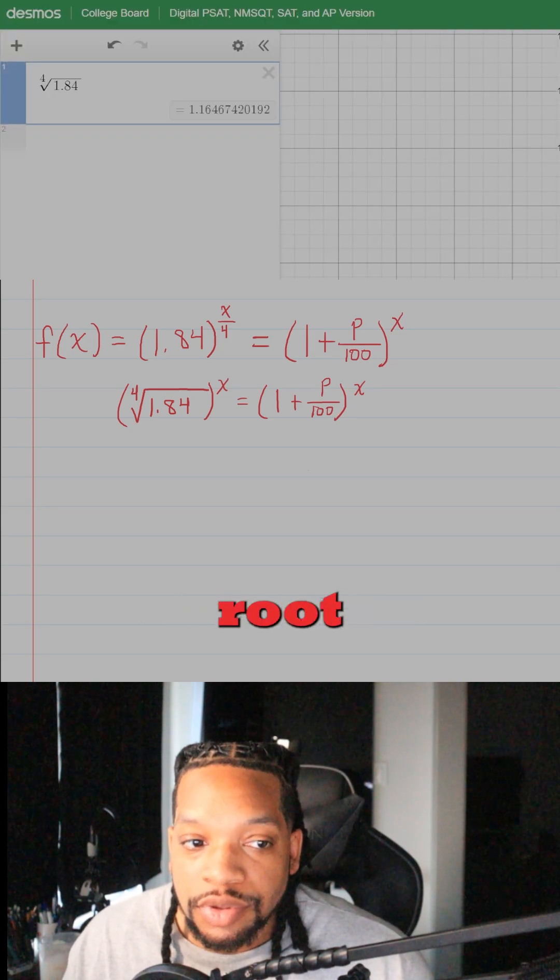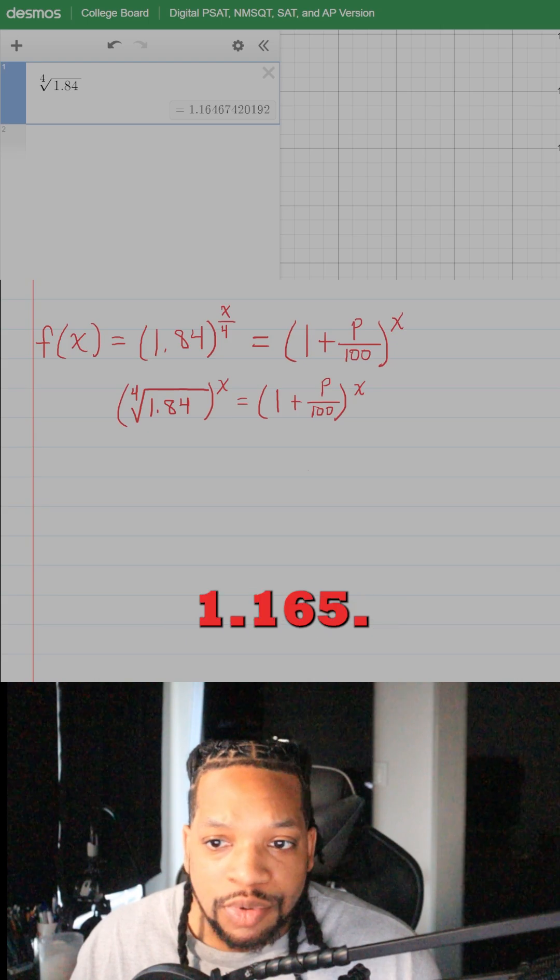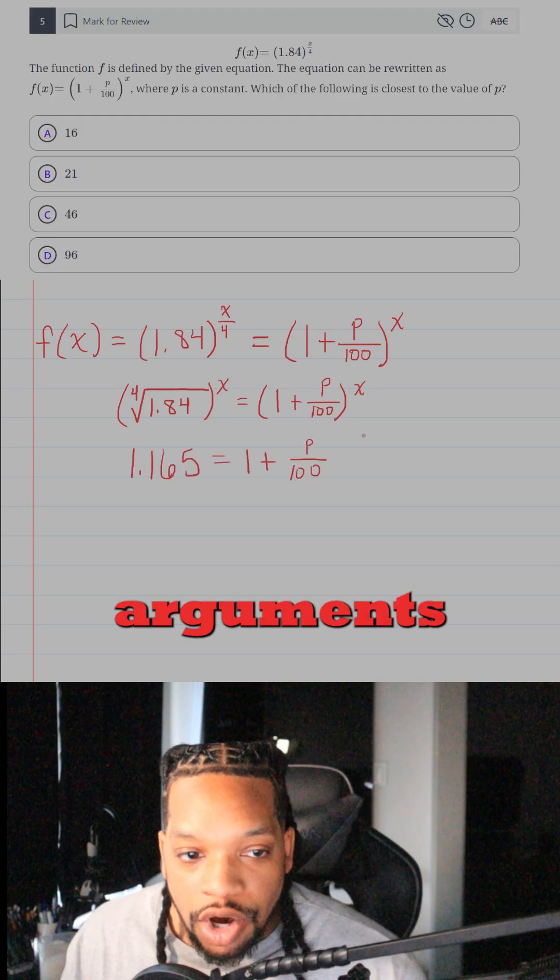I just calculate the 4th root of 1.84 and that gives me roughly 1.165. So I just set those two arguments equal to each other.